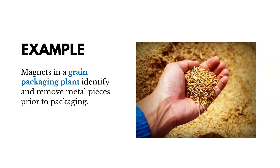Here's another example: there could be magnets in a grain packaging plant that identify and remove metal pieces prior to packaging, preventing those things from getting through.